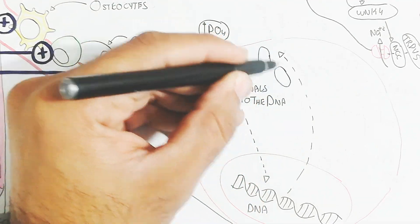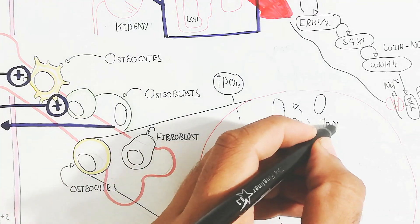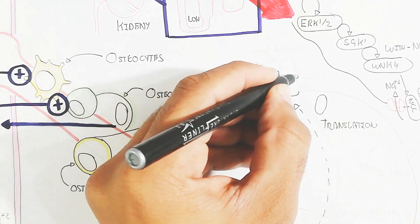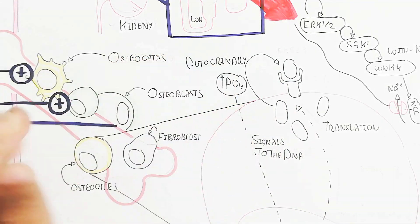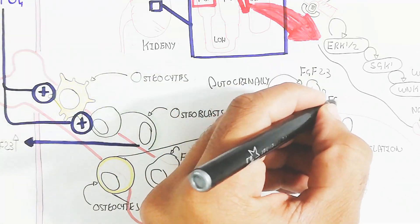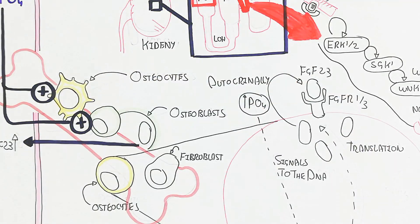Here is the osteocyte. Osteocyte is where the phosphate group when increased will trigger the DNA to produce after transcription to translation to produce FGF23.